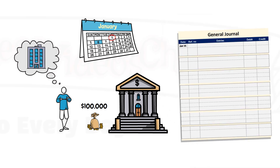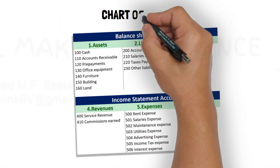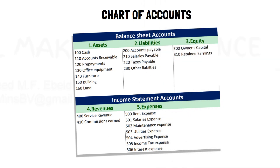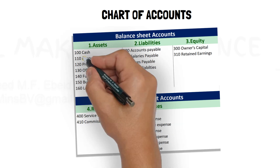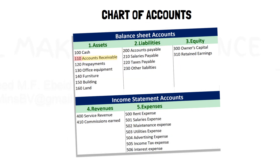To identify the accounts affected by the transaction, the accountant refers to a list of accounts called the Chart of Accounts. This list includes all the accounts that the accountant uses in recording business transactions. Each account has a name and a unique number.